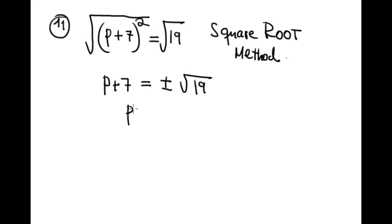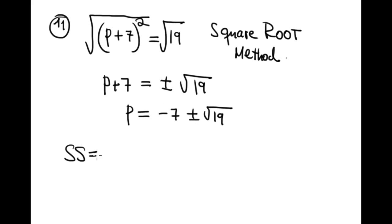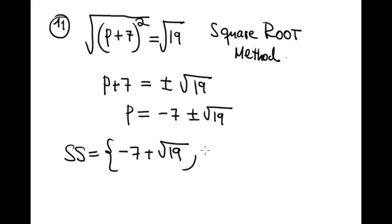So p is equal to negative 7 plus or minus square root of 19. The solution set is { negative 7 + √19, negative 7 − √19 }. Done.